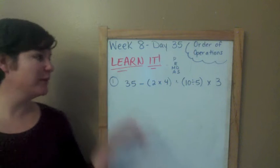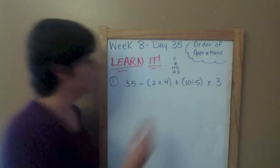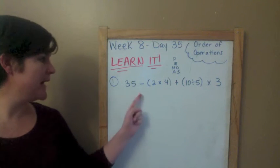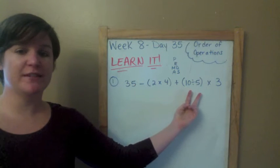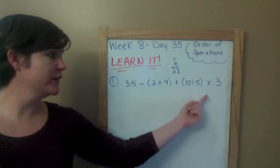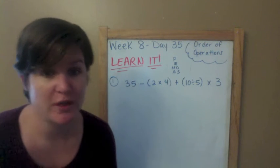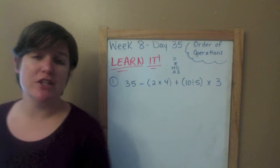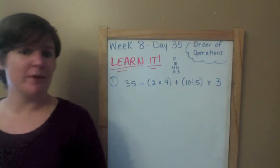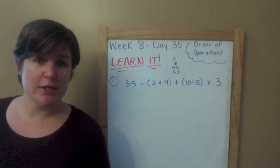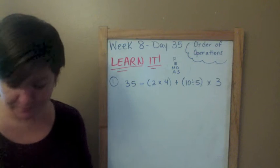Okay, so here we have problem number one. We've got 35 minus, in parentheses, 2 times 4, plus, in parentheses, 10 divided by 5, times 3. You can see we've got a lot of different operations: subtraction, multiplication, addition, division, more multiplication, some parentheses, and notice — no exponents here. I told you you'll probably see more of those in sixth grade, so don't worry about it too much right now.